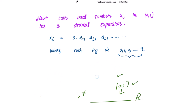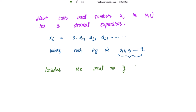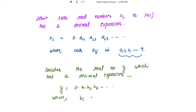Let's find that real number y which is not equal to any term of the sequence xₙ. Consider the real number y with the decimal expansion y = 0.b₁b₂b₃... where bᵢ = 1 if aᵢᵢ ≠ 1, and bᵢ = 2 if aᵢᵢ = 1, for i = 1, 2, 3, and so on.